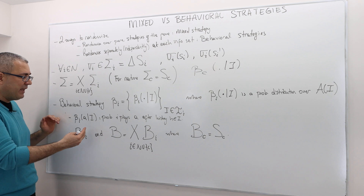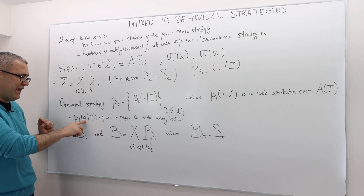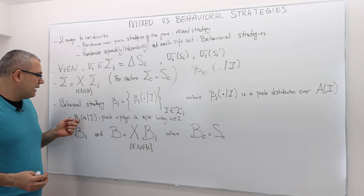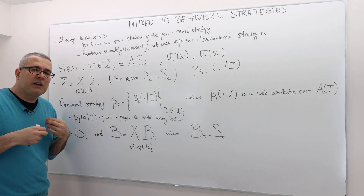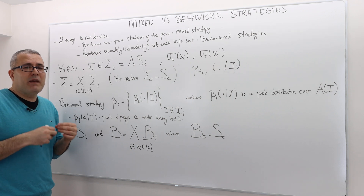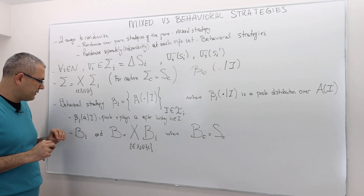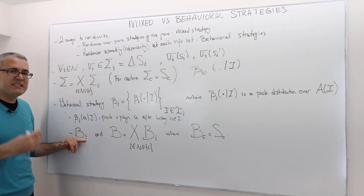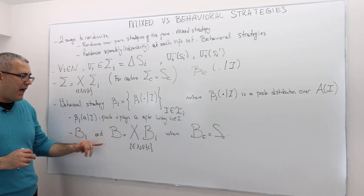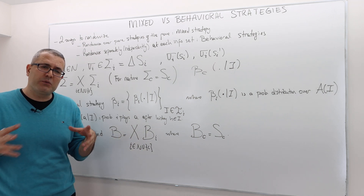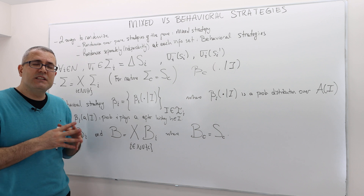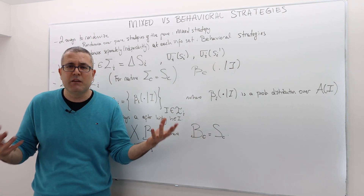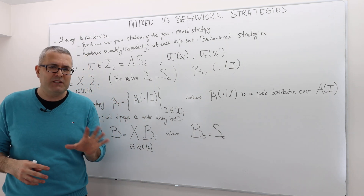Beta_i(a | i) basically means the probability that player i is going to play action a after history h, which is an element of info set i — meaning beta_i(a | i) is the probability that player i is going to play a if the game ever reaches this information set i. B_i is the set of all behavioral strategies for player i, and capital B, the Cartesian product of each player's behavioral strategy spaces, is the behavioral strategy profile. Whenever you have B_C, meaning nature's behavioral strategies, that is nothing but his pure strategies — we don't make any randomization for nature.